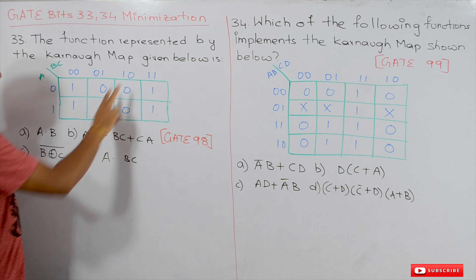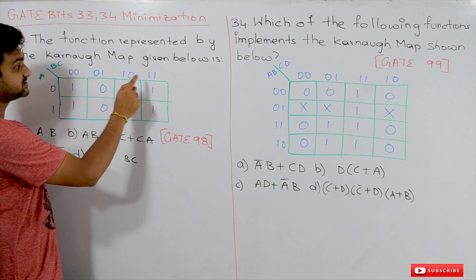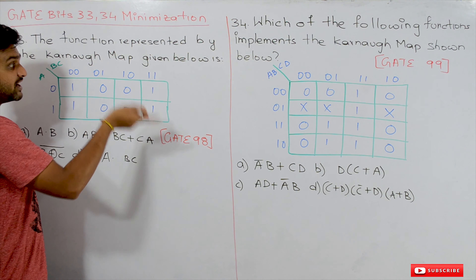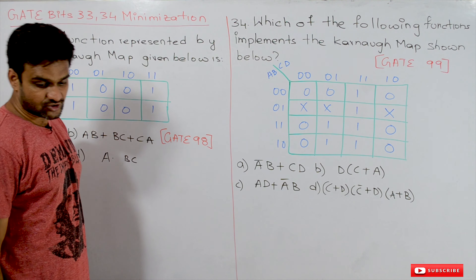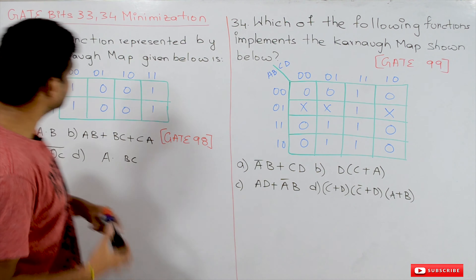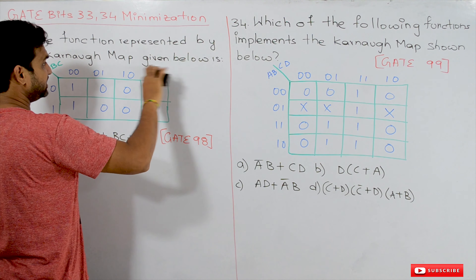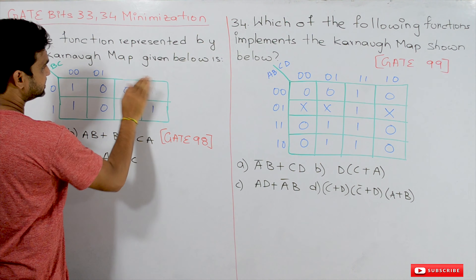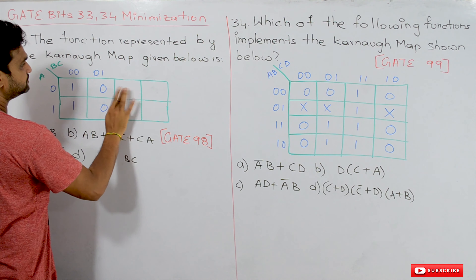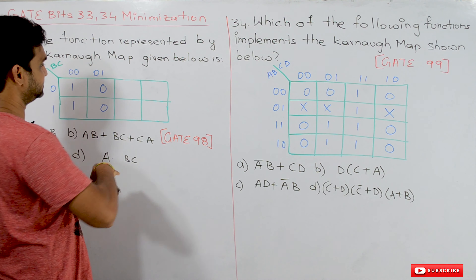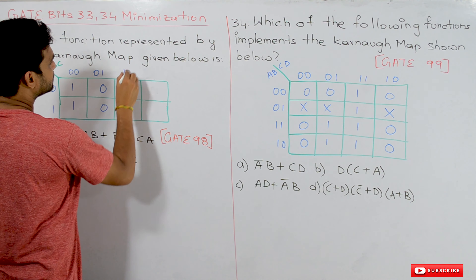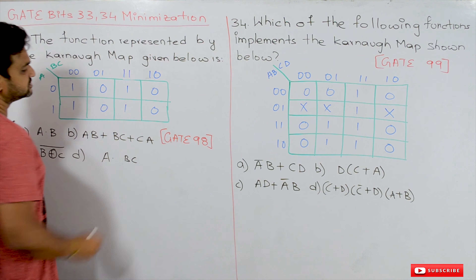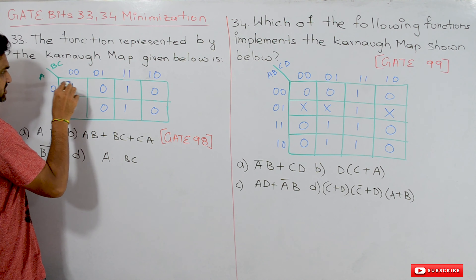Here we have to swap these values because we should have the order 0 0, 0 1, 1 1, and 1 0 — why we need this order has already been discussed in previous videos. So we are just swapping the values and will try to minimize it.